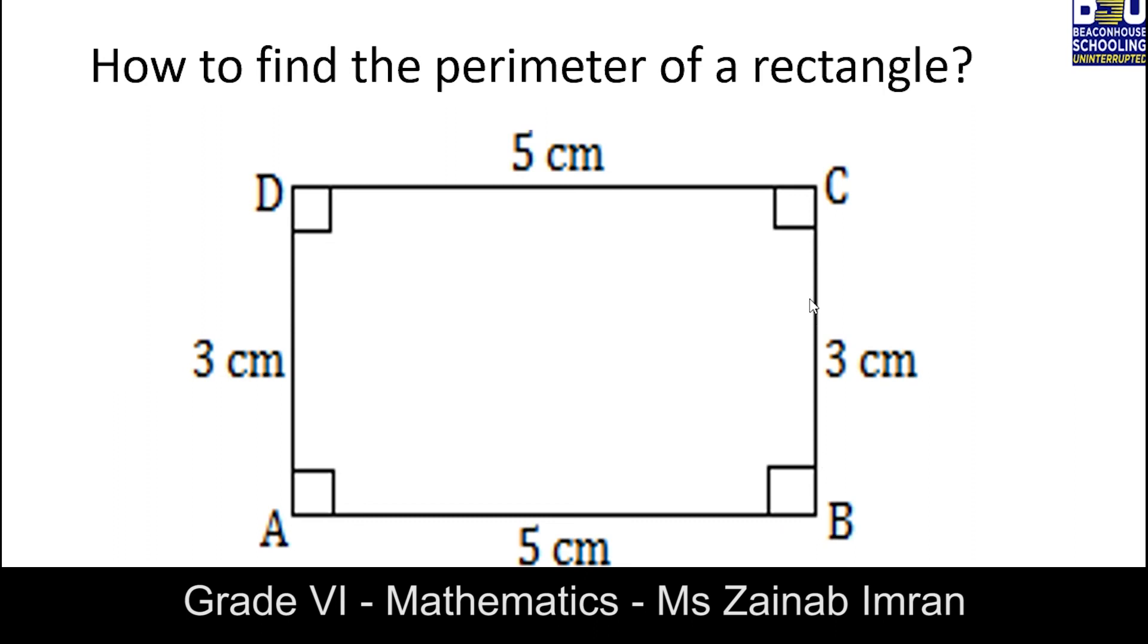You can also find the perimeter of a rectangle by applying a formula. Now as you know that opposite sides are equal, so it means 2 lengths and 2 widths. Its formula is 2 into length plus width. So substitute the values of length and width and multiply with 2. You will get the perimeter of a rectangle. So this is how you can find with the help of formula as well.